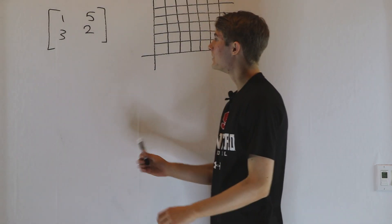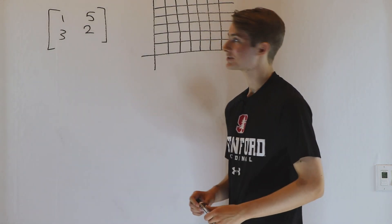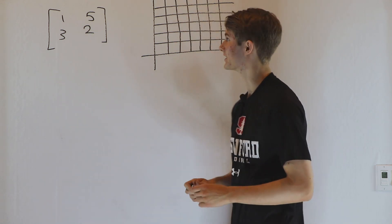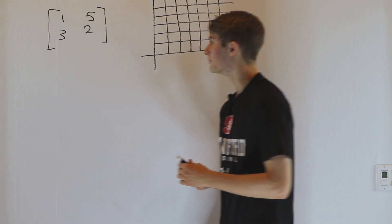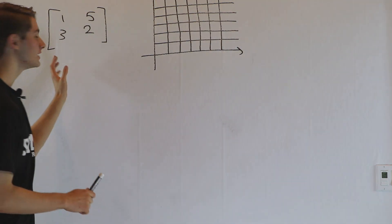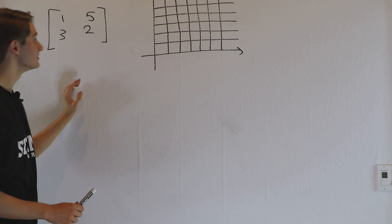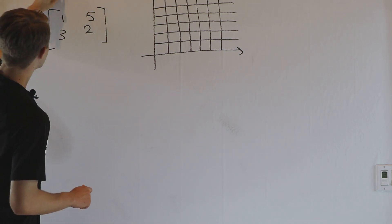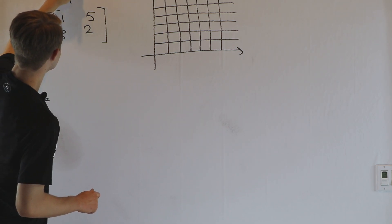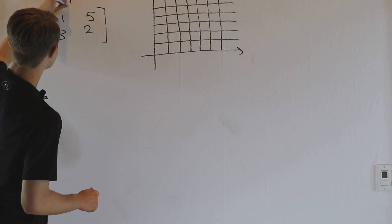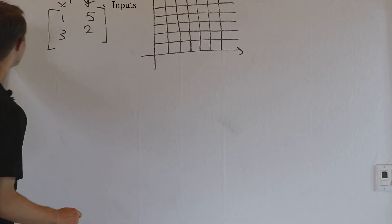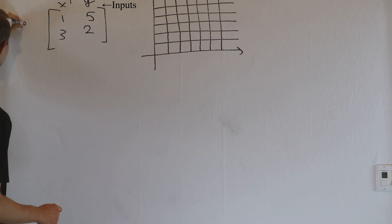So we're going to talk about what is a matrix. We have four numbers here, but what are these numbers telling us? Well, I think the best way to think about a matrix is in terms of inputs and outputs. The columns of the matrix are telling us what inputs we're looking at, and the rows are telling us the outputs.